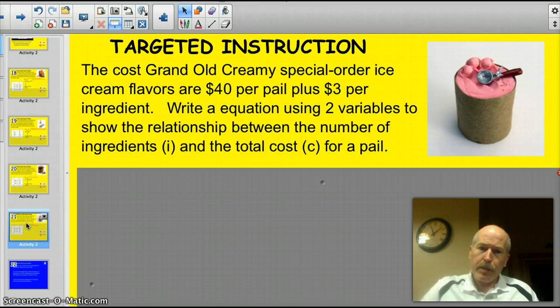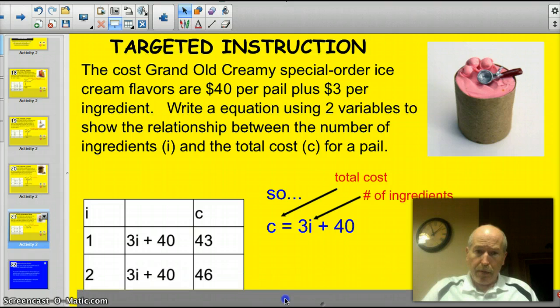Okay, let's see how you did. Well, again, I built a function table, and I knew that it was going to be $40 per pail, and the variable that was going to be changing was the number of ingredients, and that was $3. So I said, okay, one ingredient would be three times, because it was $3 for the ingredient, plus 40. So 3i, substitute in 1, so 3 times 1, plus the 40 would be 43. Two ingredients would be three, $3, times the number of ingredients, i is 2, so 3 times 2, plus that $40 for the pail is 46.